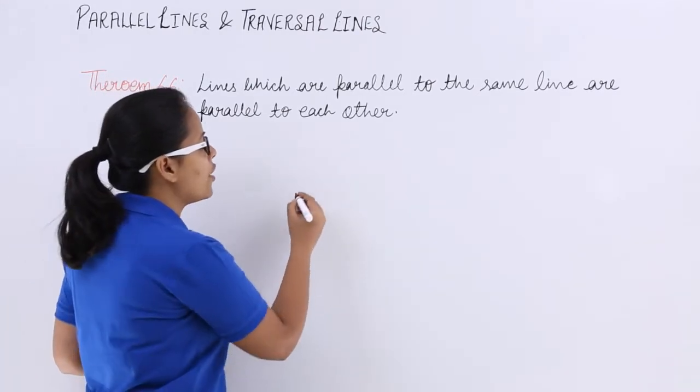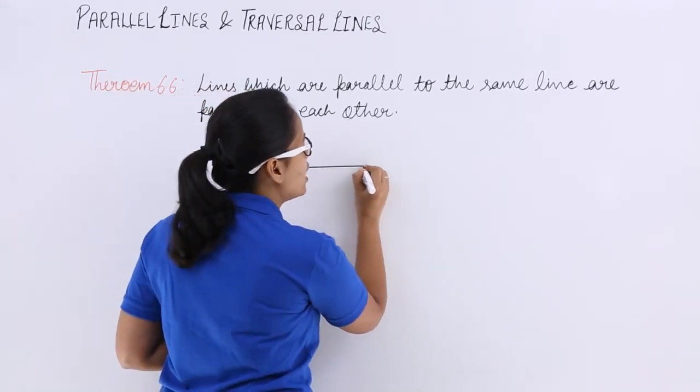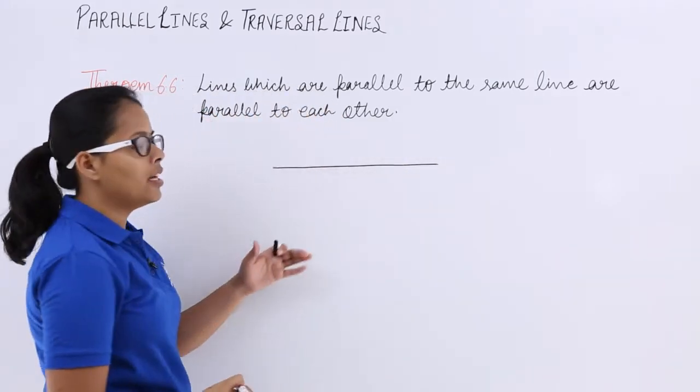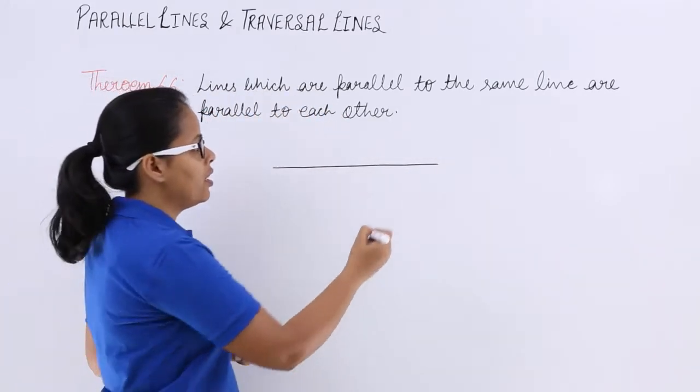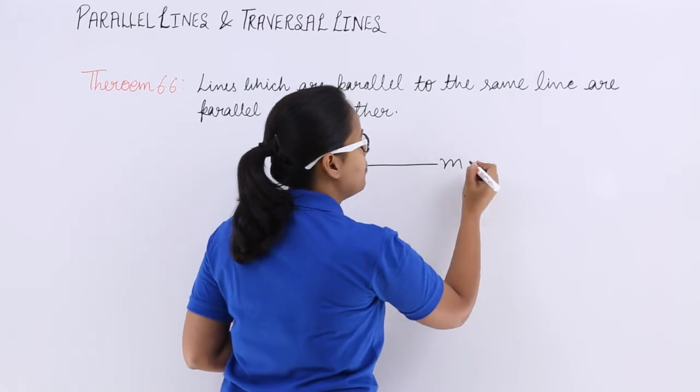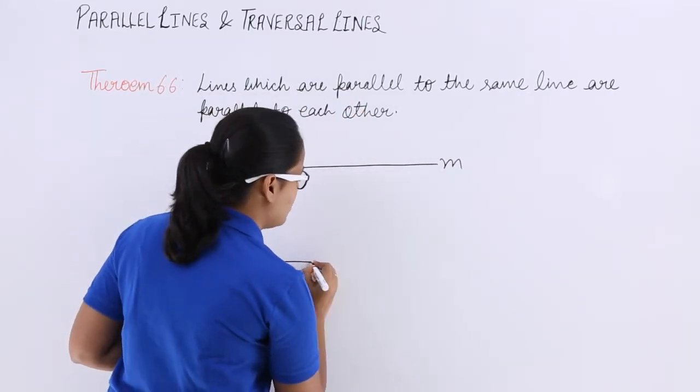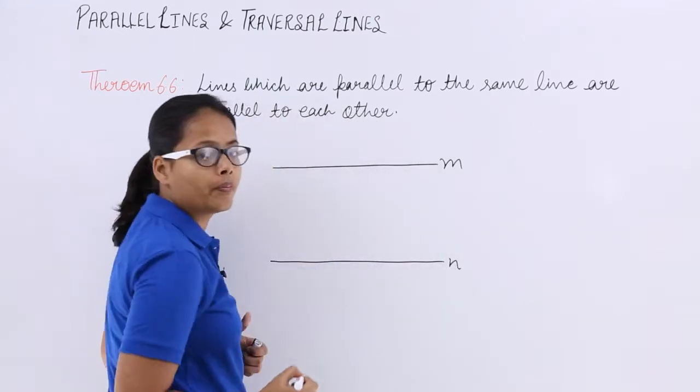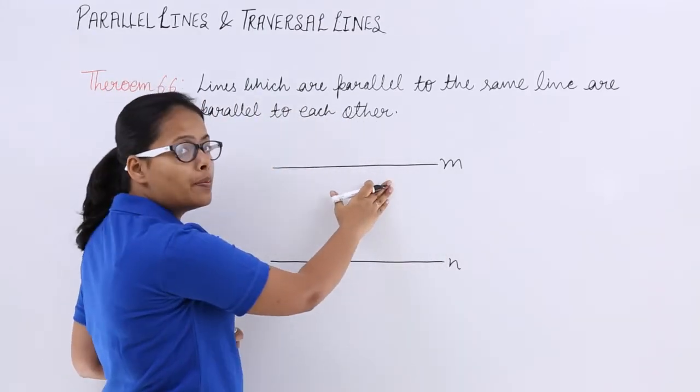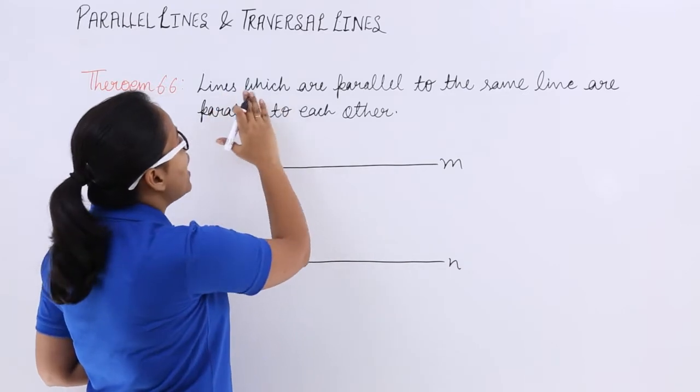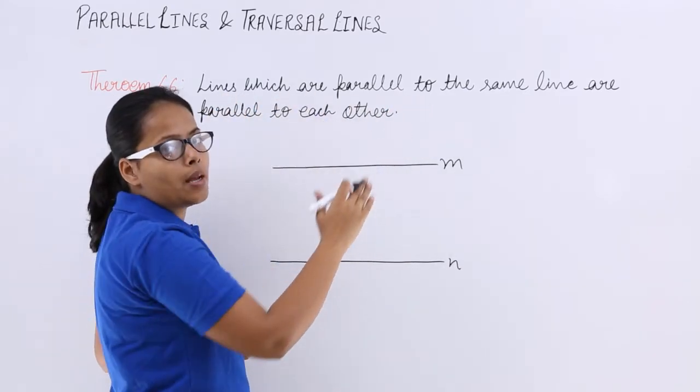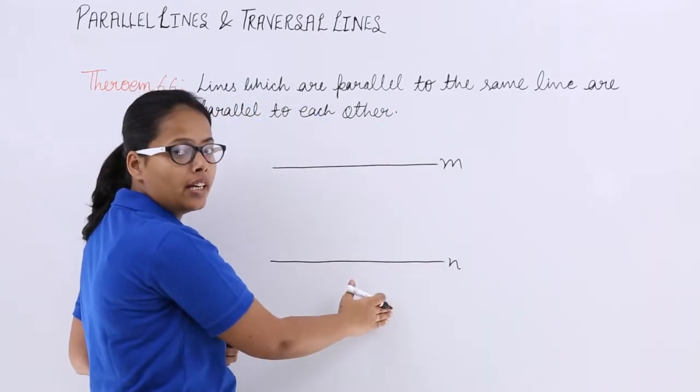So now let's start drawing and see what this statement is actually saying. This is a straight line, name it as m. And let's say there is another line. And it has been said that lines which are parallel to the same line—I have drawn two lines here.